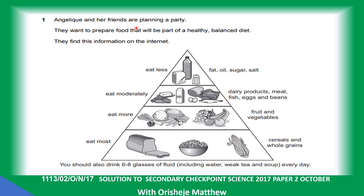Anjali and her friend are planning a party. They want to prepare food that would be part of a healthy, balanced diet. They find this information on the internet. Look at the different classes of food in the different layers of this food pyramid. Below you have the carbohydrates, like cereal, corn, and bread.